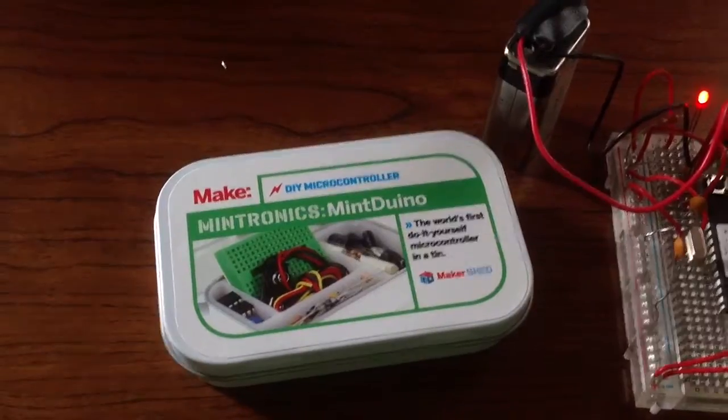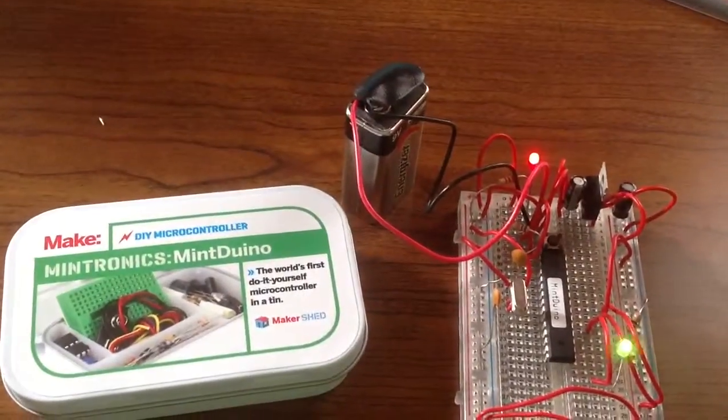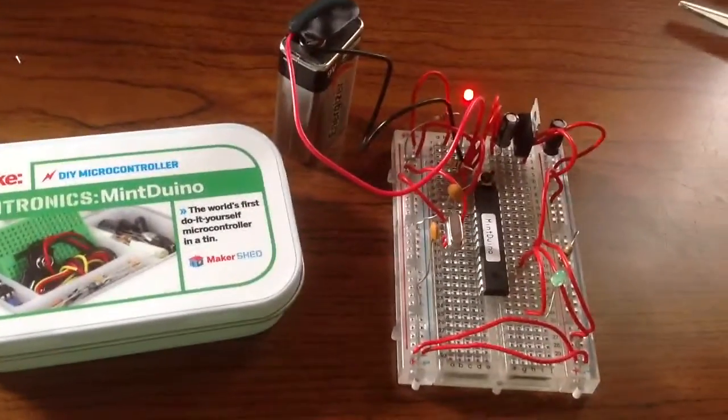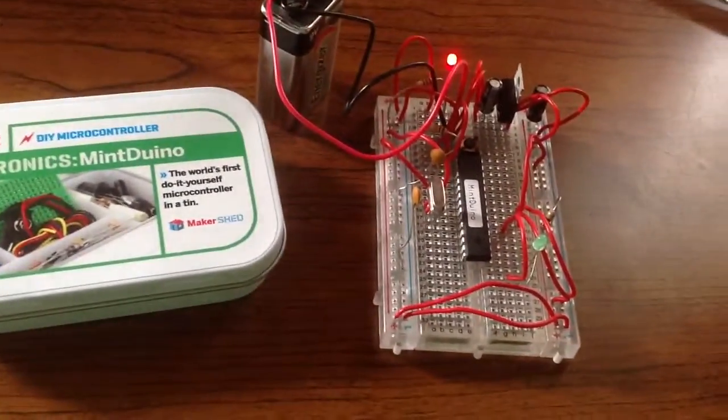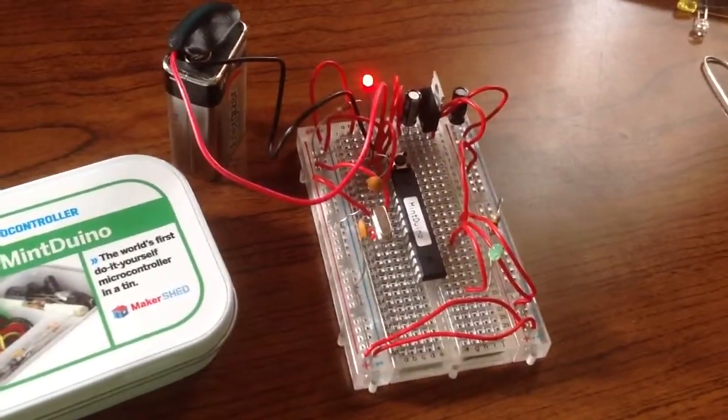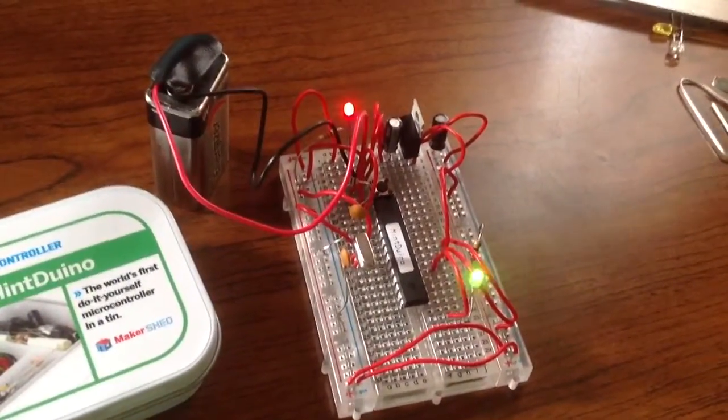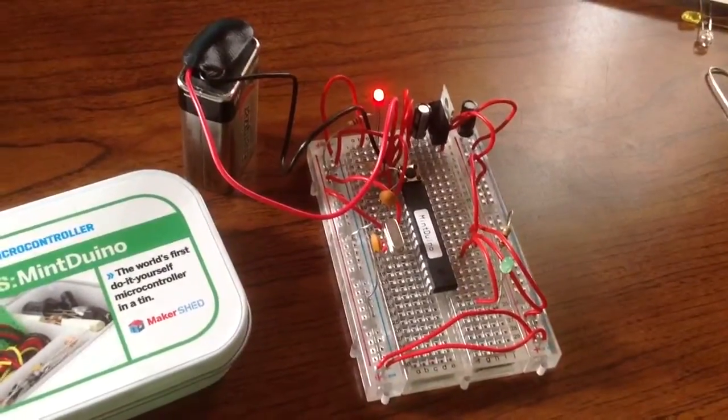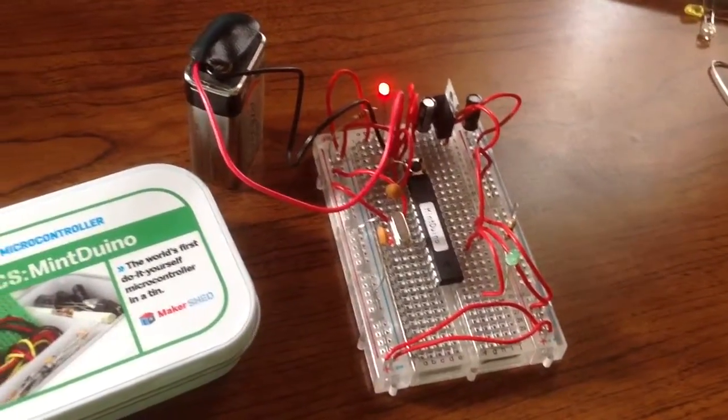For example, you wouldn't know if this came with some type of battery source right off the bat. This is just something I found around the house—you would have to find a nine volt battery.